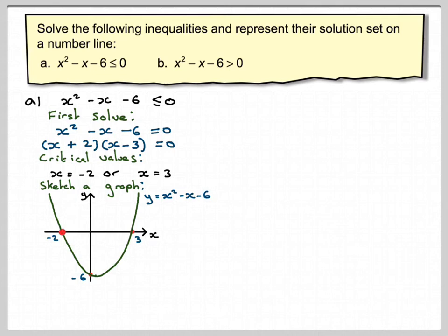Now we want to know, those are critical values, we want to know where it is negative. So the graph is negative in the bit that's orange, so it's negative between minus 2 and 3. We can include those points because it's less than or equal to.